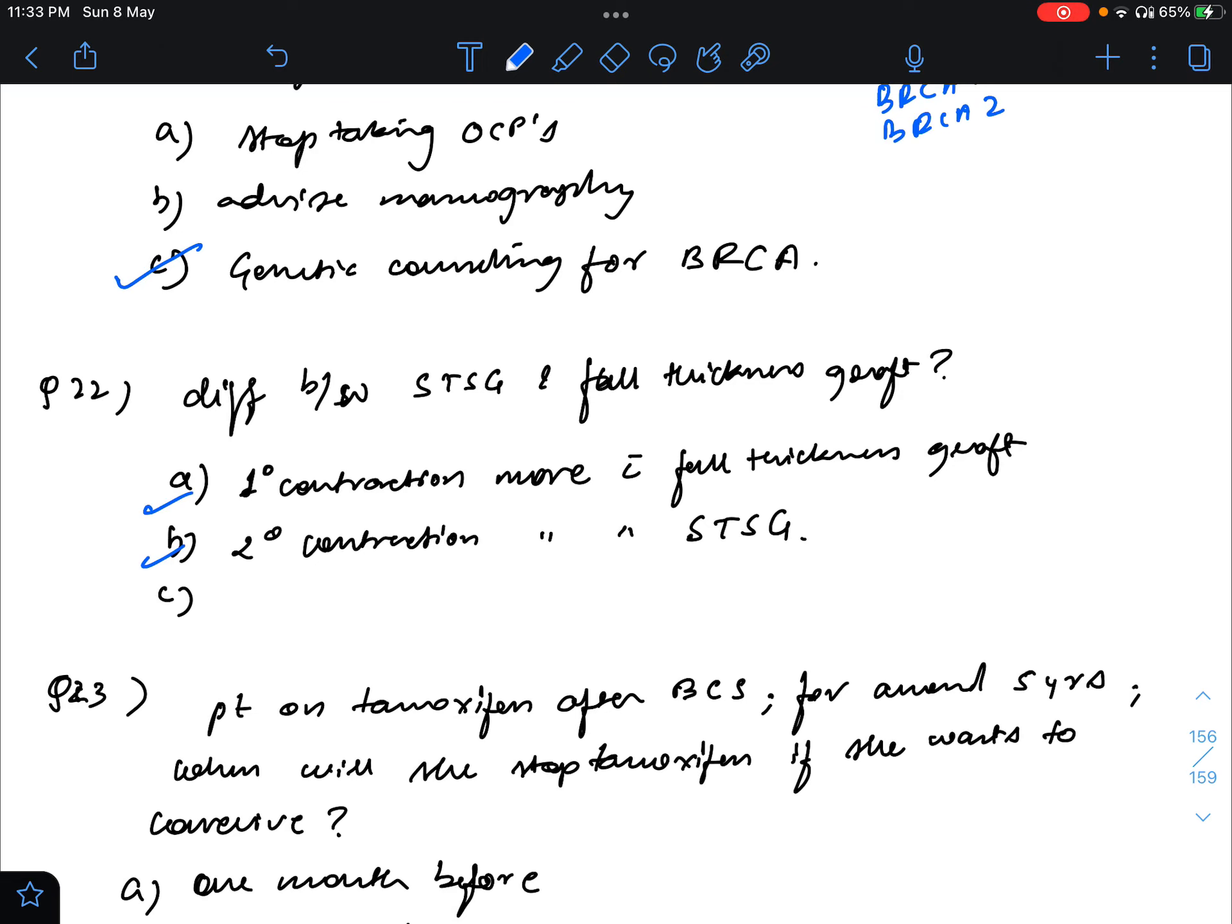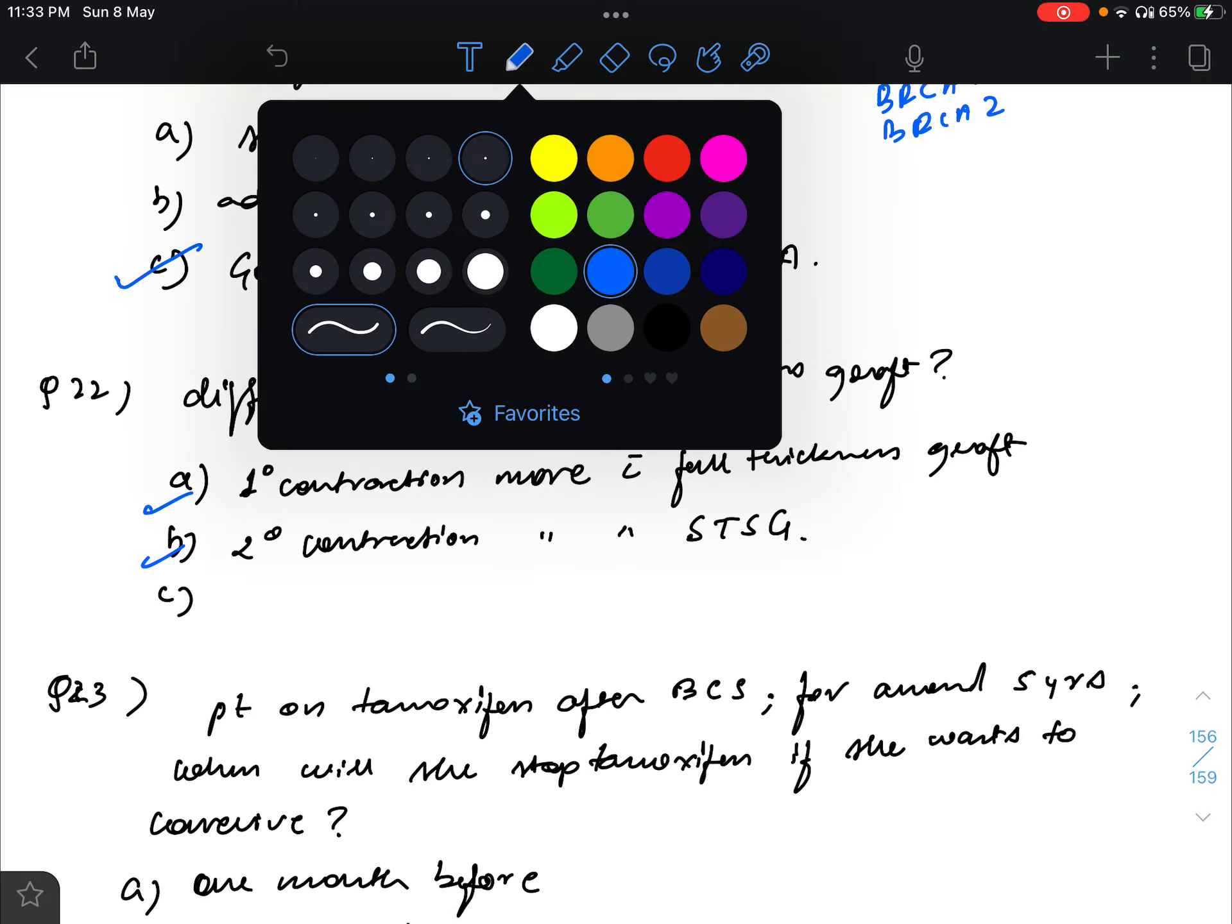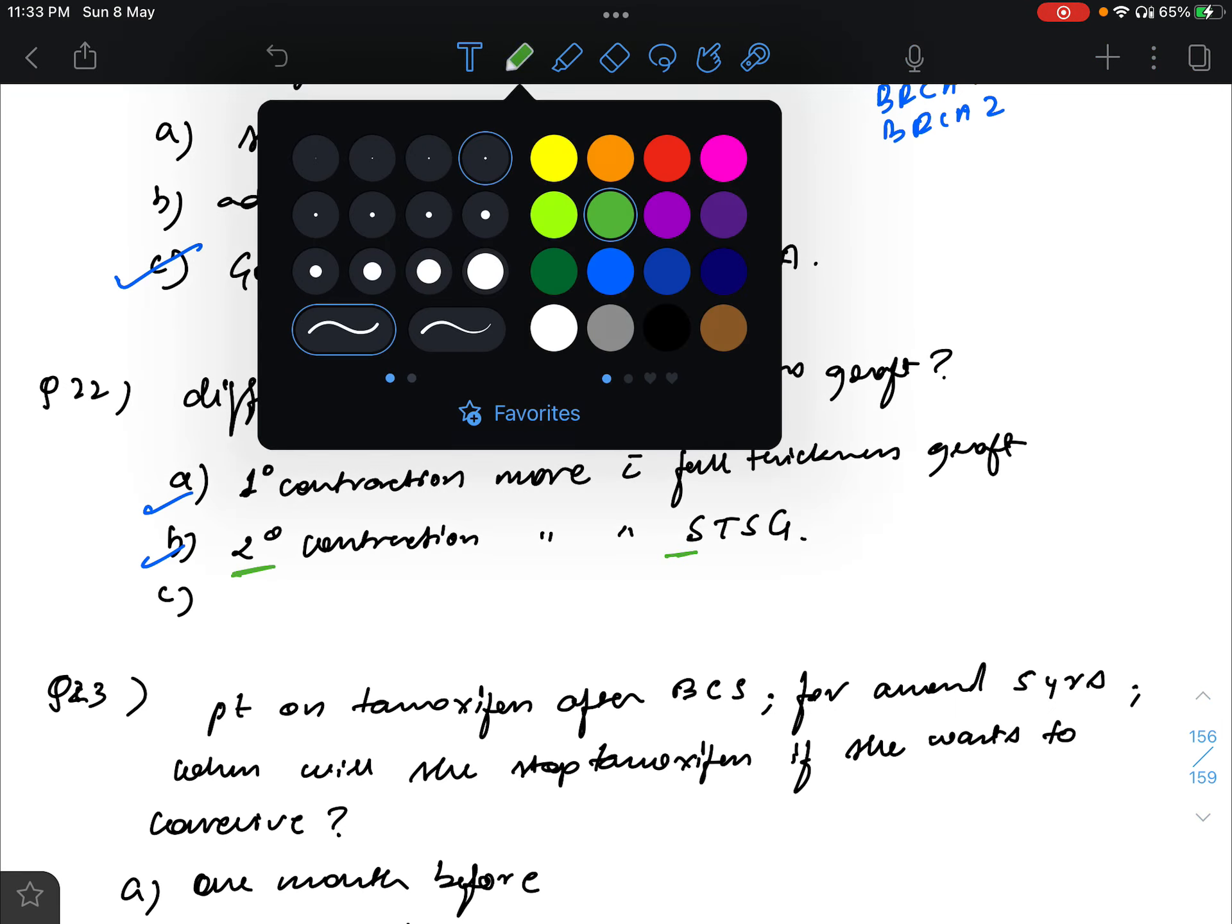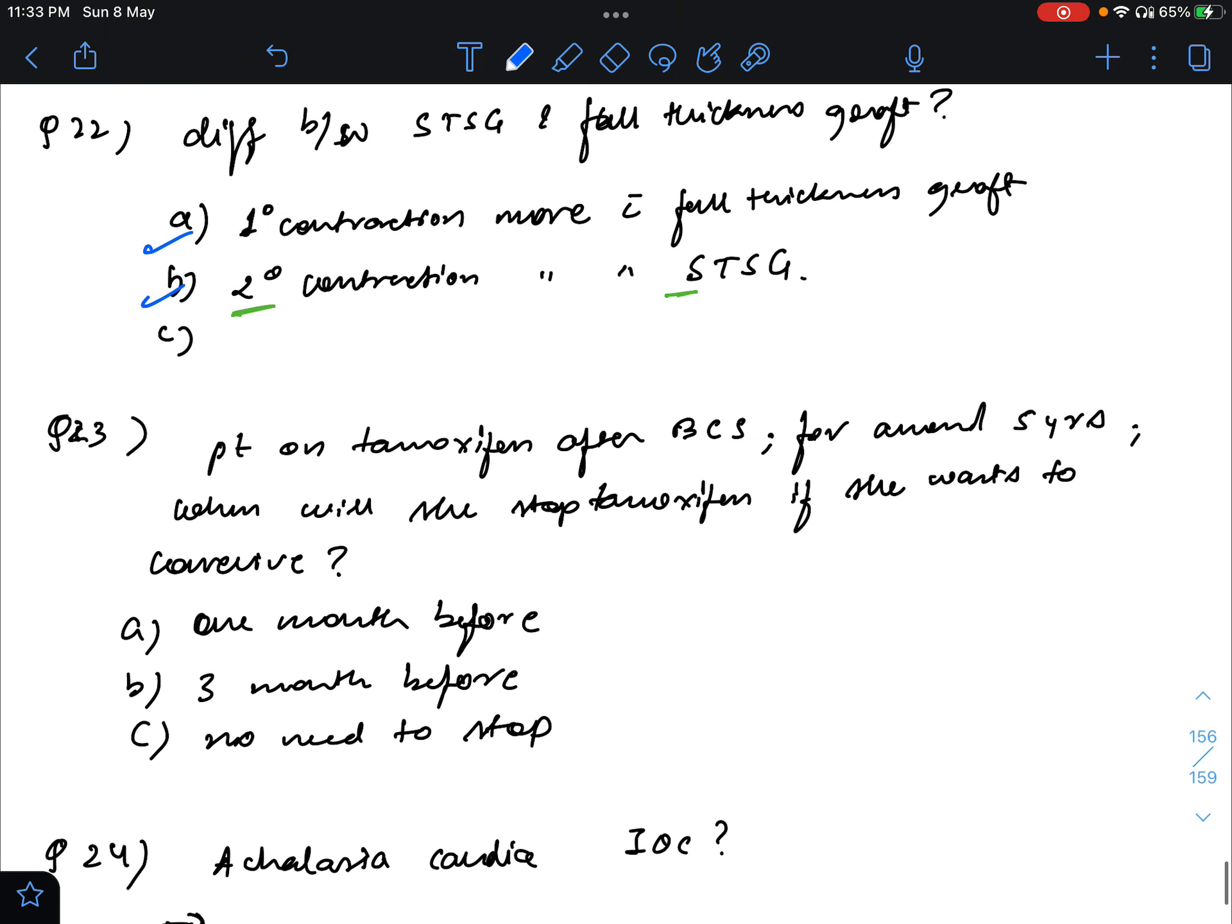And secondary contraction means after a few months that we get. That is called secondary contraction. So simple way to remember this is that secondary contraction will be S, so it will be split thickness skin graft.